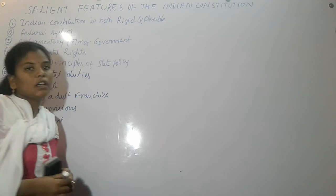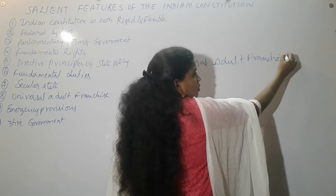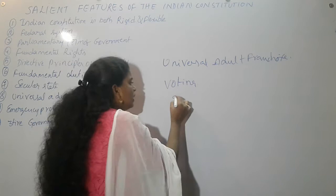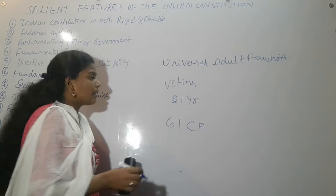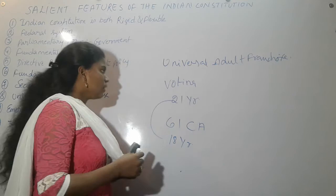Universal adult franchise means that adults are permitted to vote. By the 61st Constitutional Amendment, the voting age was reduced from 21 to 18 years. So after the 61st Constitutional Amendment, 18 years is the voting age.